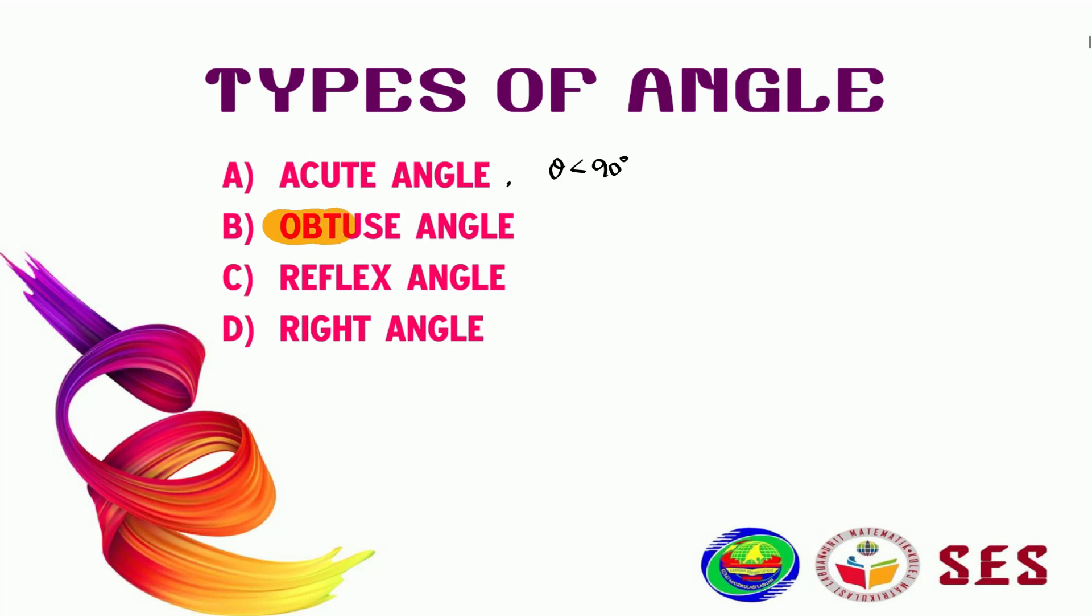The next one is called Obtuse Angle. An angle is called Obtuse Angle if it is between 90 and 180 degrees.